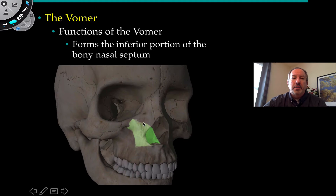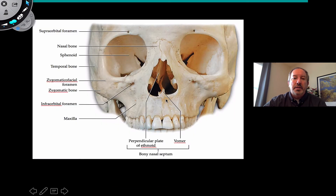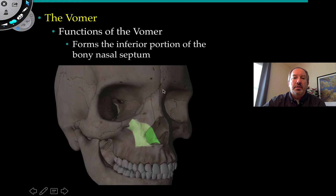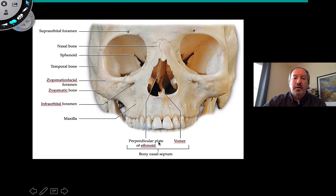This little bone is called the vomer. The vomer forms the inferior portion of the bony nasal septum — the lowest part of the nasal septum. The perpendicular plate of the ethmoid bone contributes above it, while the vomer contributes to the inferior part of the nasal septum.